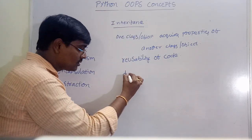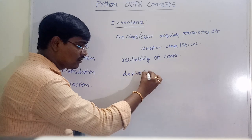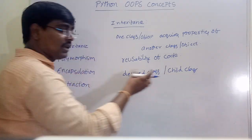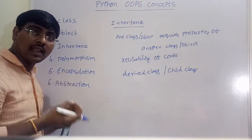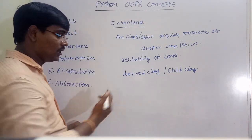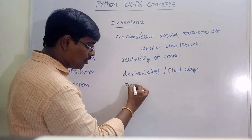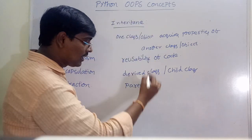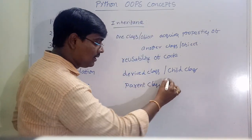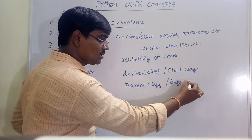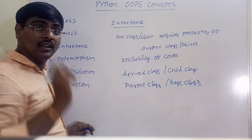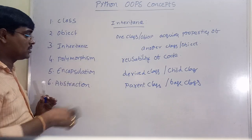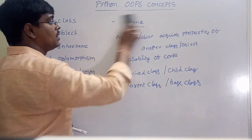The class that acquires properties from another class is known as the derived class or child class. The class that provides the properties — from which we are getting them — is called the parent class or base class. This is inheritance. Now let's move to polymorphism.